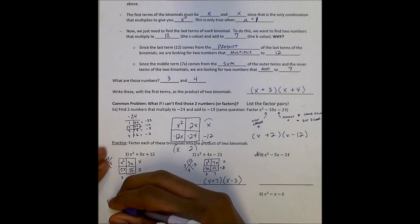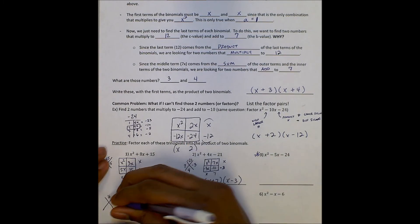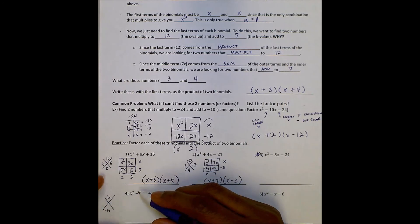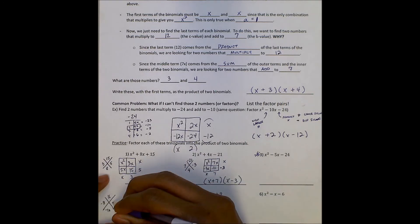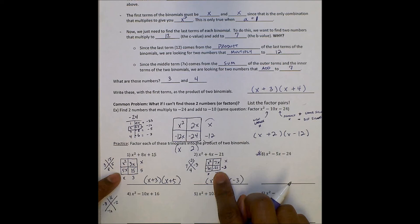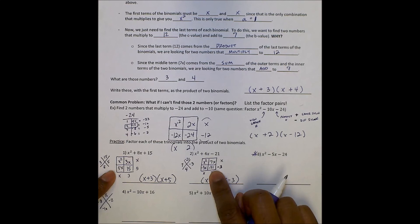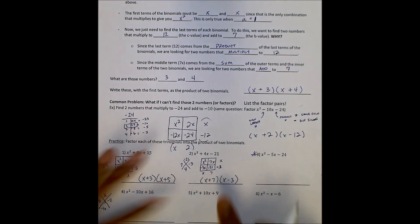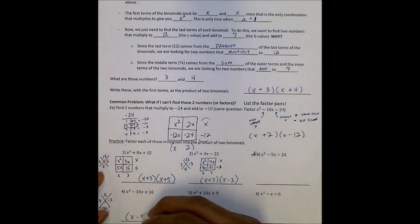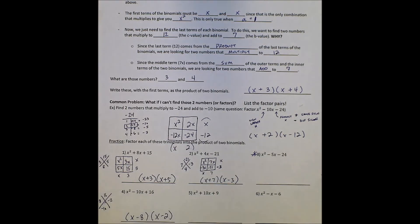Number 4: looking for two numbers that multiply to give me 16 and add to give me negative 10. The product is positive so they're the same sign, and the sum is negative so they're both negative. Those numbers are negative 8 and negative 2. Notice when A is 1, once you find those two numbers, that's basically your answer: X minus 8 times X minus 2.